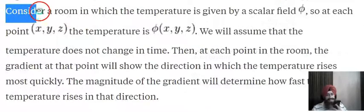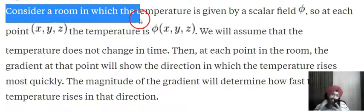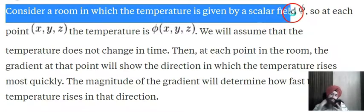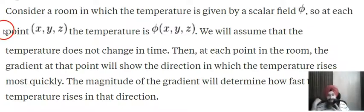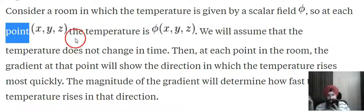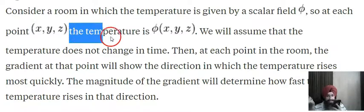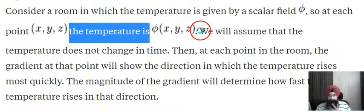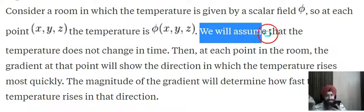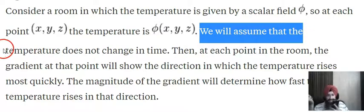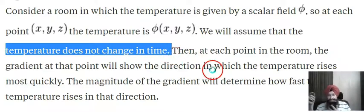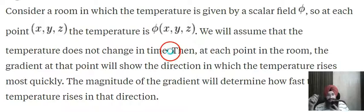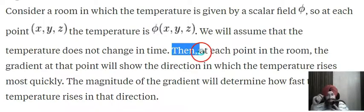Let's consider a room in which there is a temperature, written as T. Temperature is a function of x, y, z — it is changing in the space, so it becomes a function of the space parameters x, y, z. We assume that temperature is not changing with respect to time.